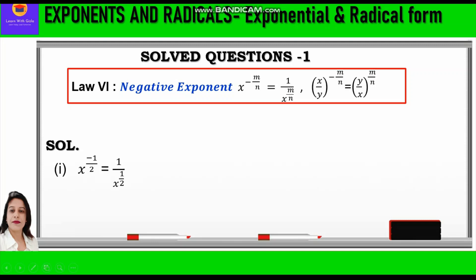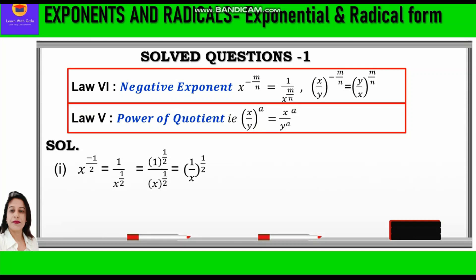First question: x raised to power minus half. We apply Law 6 and reciprocate the base to get 1 upon x raised to power half. Further, we can write this as (1 raised to power half) upon (x raised to power half), which equals (1 by x) whole raised to power half, applying the fifth law — power of a quotient, which states (x upon y) raised to power a equals x raised to power a upon y raised to power a. Second part: x raised to power minus 2 by 5 equals (1 by x) whole raised to power 2 by 5.